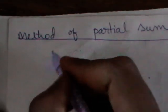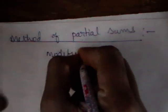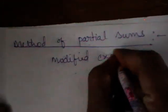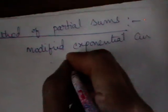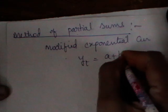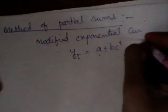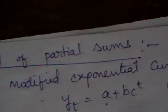The second method we are going to discuss is the Method of Partial Sums. We consider the same curve, which is nothing but the modified exponential curve. Just now we discussed Yt = A + BC^t. The three parameters we have are A, B, and C. We are going to find out these three unknown constants by using the method of partial sums.